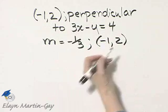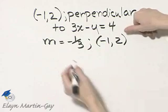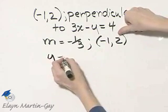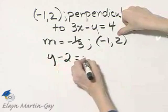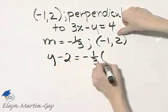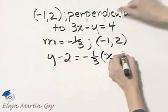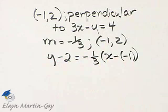Since I have slope and a point, I'll use the point-slope form. So that's y minus the y value is equal to negative 1/3 times x minus the x value.